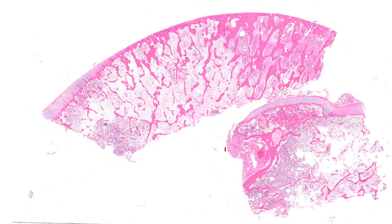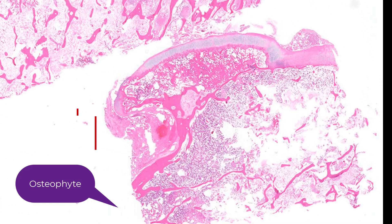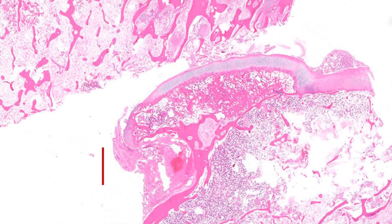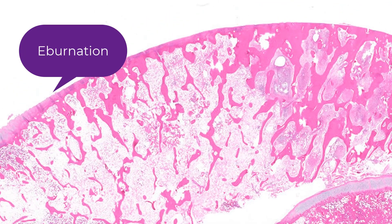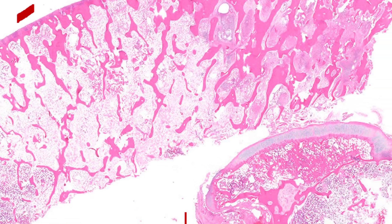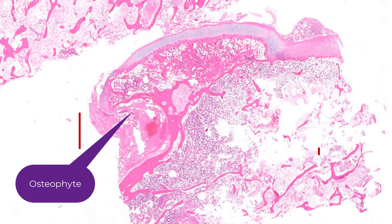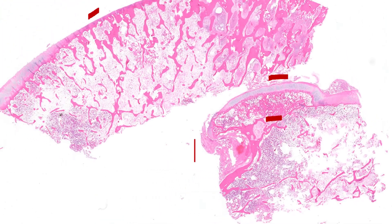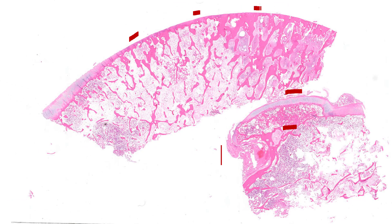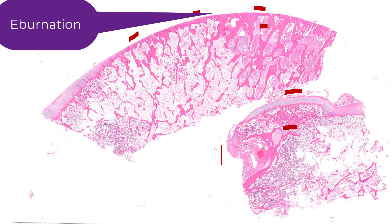I'm going to show you two fragments here. One is an osteophyte, and this is the articular cartilage showing eburnation. An osteophyte is extra bone growing at the periphery of the joint. The surface of the osteophyte is cartilage, often fibrocartilage, and the interior of the joint is cancellous bone, often containing marrow tissue. The larger fragment here shows severe osteoarthritis with eburnation and subchondral sclerosis.